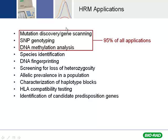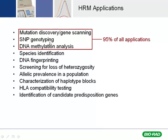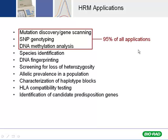What are some of the applications? Mutation discovery, SNP genotyping, and methylation are by far the most popular applications used in HRM. You can also do species identification, DNA fingerprinting, screening for loss of heterozygosity, and a bunch of other applications. There are lots of ways you can use high-resolution melt analysis.